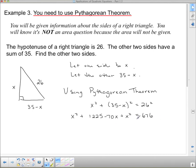And now, I need to rearrange, collect like terms, get one side equal to zero. So, on this side, I have 2x squared. I have this minus 70x. And then, when I do 1225 subtract 676, I get plus 549. And that equals zero.